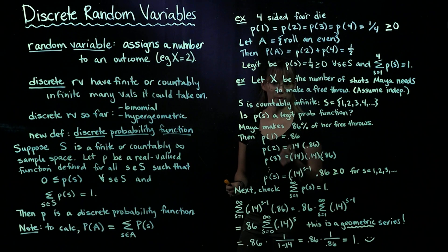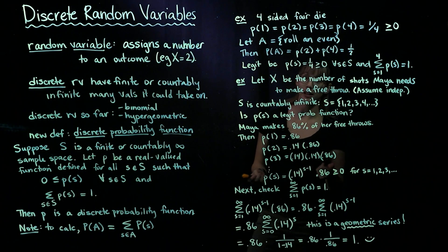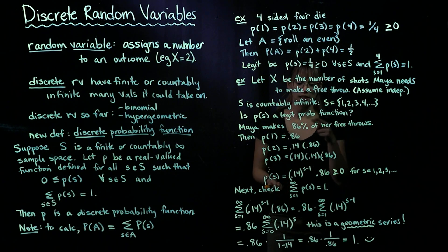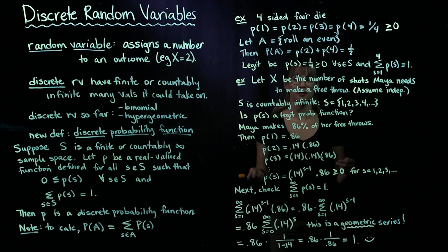For example, say you have a coin and you flip it three times and you're recording the number of heads that you get. If you see heads, tails, heads, then your random variable X would be equal to 2.